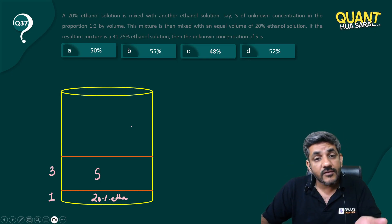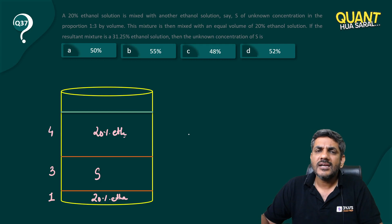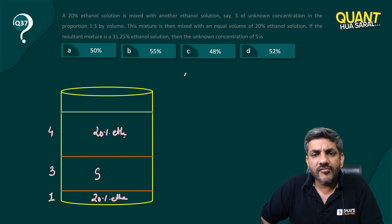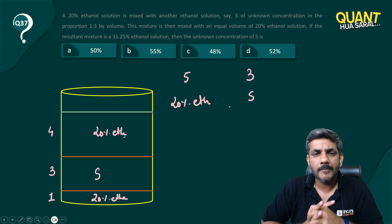Can't I just say it is like five parts of 20% ethanol solution mixed with three parts of S? Isn't that correct? I hope you are getting my point: one liter of 20% ethanol, three liters of S, and then four liters of 20% ethanol.